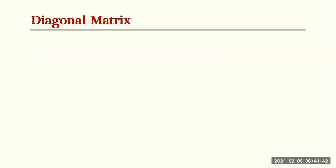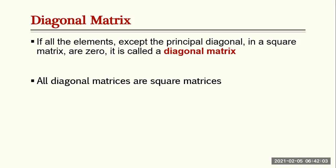A diagonal matrix: if all the elements except those on the principal diagonal in a square matrix are zero, it is called a diagonal matrix. All diagonal matrices are square matrices, which means they have the same number of rows and columns.